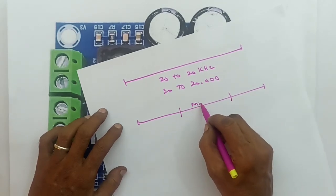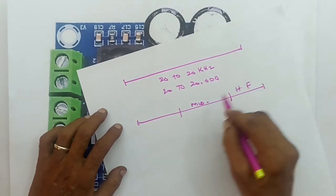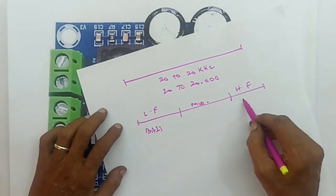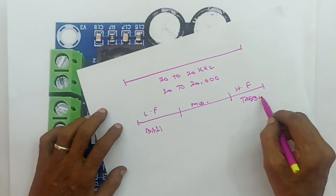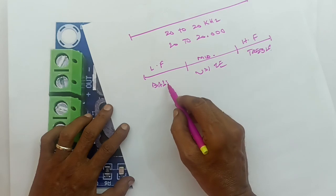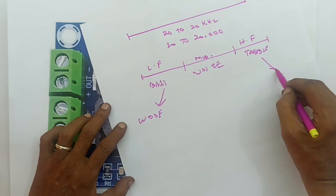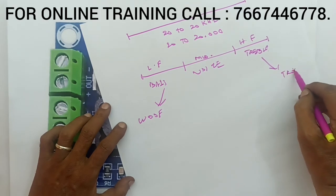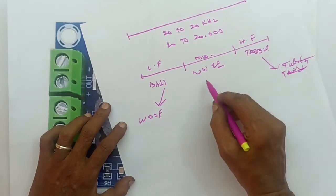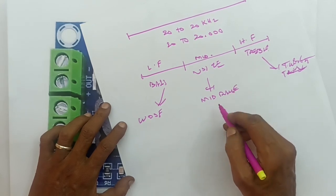There is mid-range — middle frequency, high frequency, and low frequency. For high frequency, it's treble. You know bass for low frequency — that gives you the woofer. If you have treble, you can have a tweeter. You can have a mid-range speaker, which is very rare but good quality.